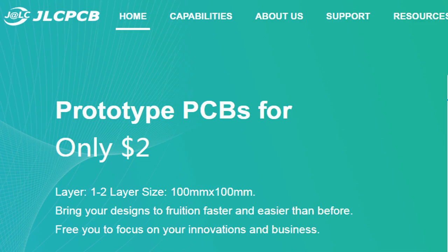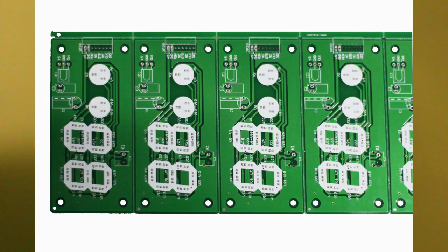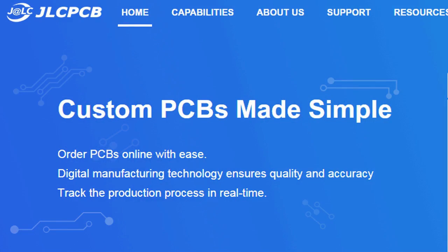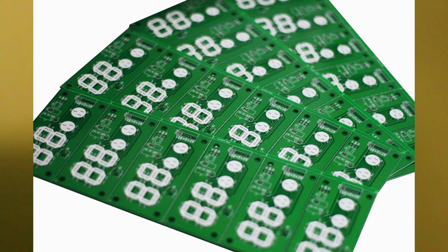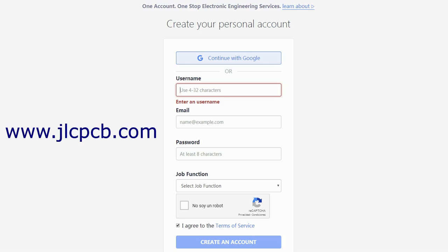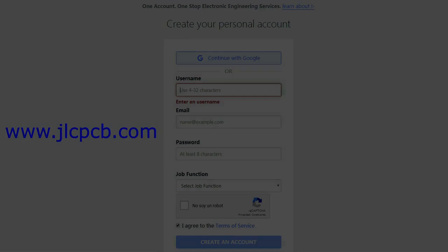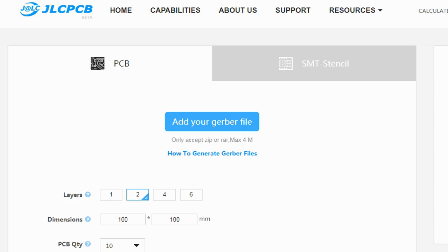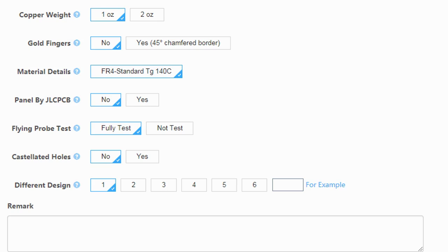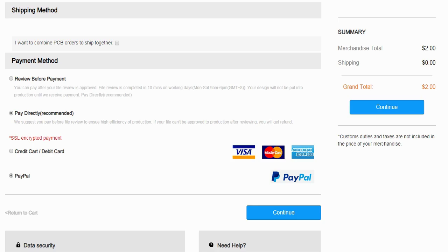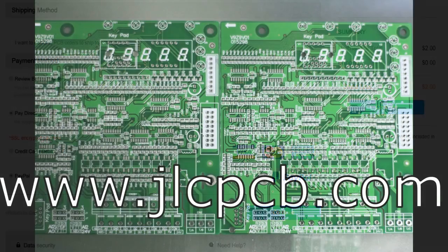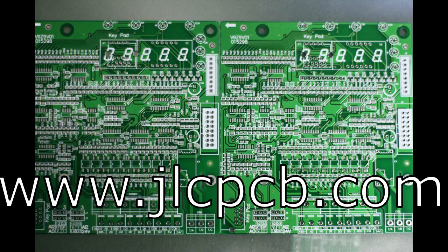This video is sponsored by JLCPCB. JLCPCB is a company that makes excellent quality PCBs at an unbeatable price. You can order boards online in minutes. After registration, upload your Gerber files, select the PCB properties, select the payment method and place your order. Best price and quality for all your PCB needs.